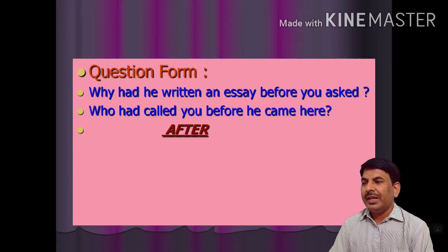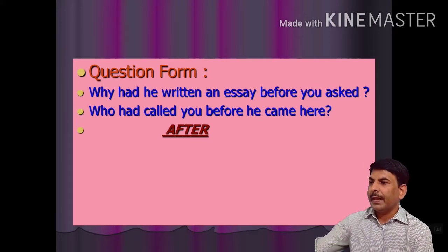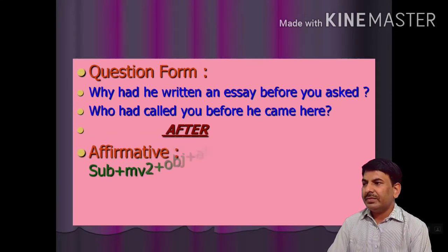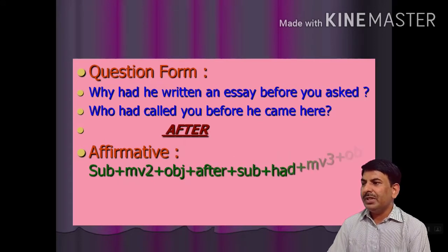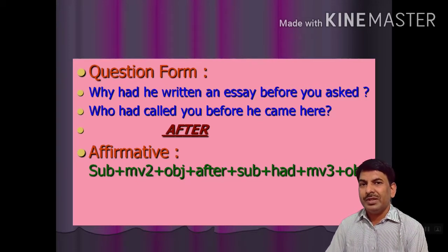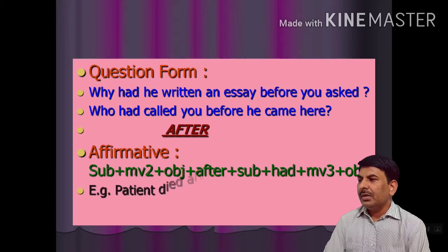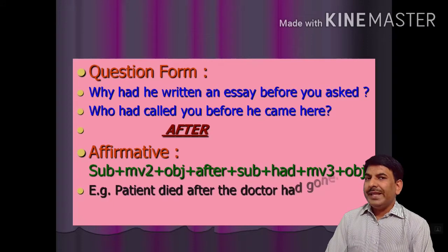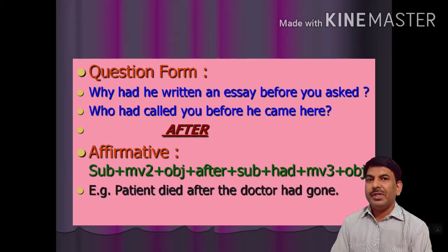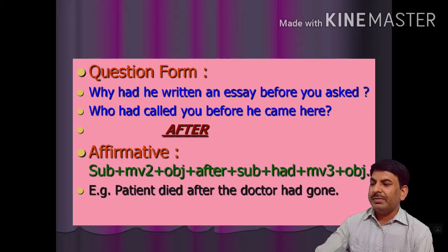Dear students, let us have some more rules of past perfect tense, in which we are going to use the conjunction 'after'. In the affirmative sentence of this type, the structure is: subject + second form of the main verb + object + after + subject + had + third form of the main verb + object. For example: 'Patient died after the doctor had gone.' The first clause belongs to simple past tense and the second clause belongs to past perfect tense.